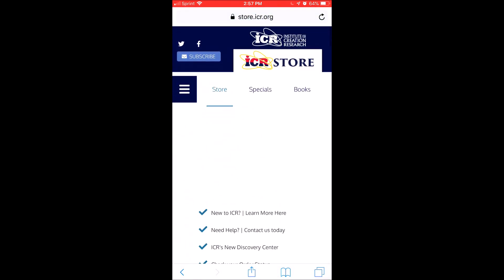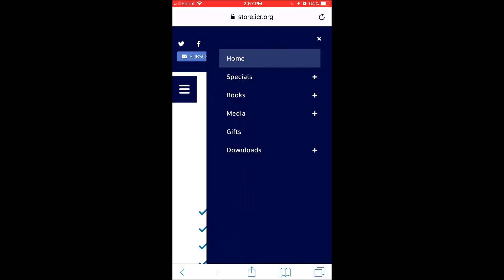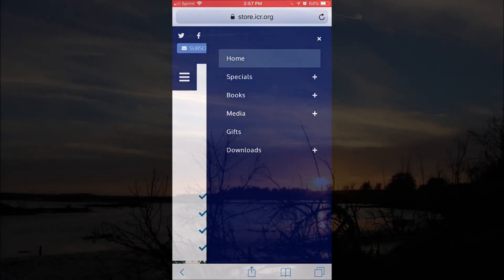On their website, www.icr.org, they lay out very succinctly 14 evidences for a young world.